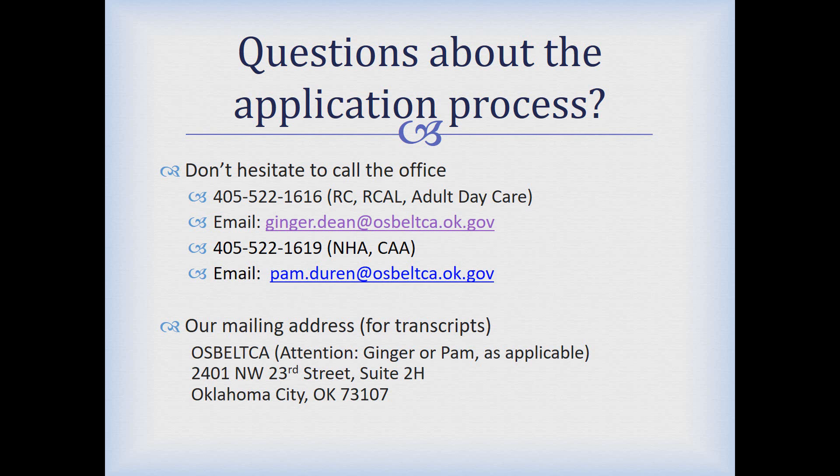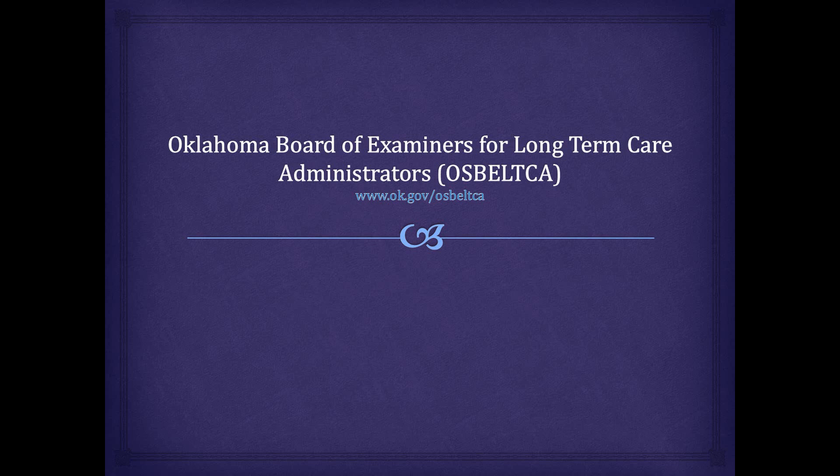That's pretty much the process overall. If you have problems you can still call us. For residential care, assisted living, and adult daycare, call Ginger at 405-522-1616. For nursing home administrators and certified assistants, call Pam at 405-522-1619. Email addresses are available for both of them as well. If you're having a transcript mailed to us, the address is OSBELTCA, attention Ginger or Pam depending on your license type, 2401 Northwest 23rd Street, Suite 2H, Oklahoma City, 73107. Thank you and we look forward to working with you throughout this process.